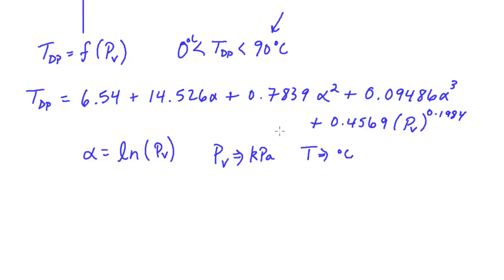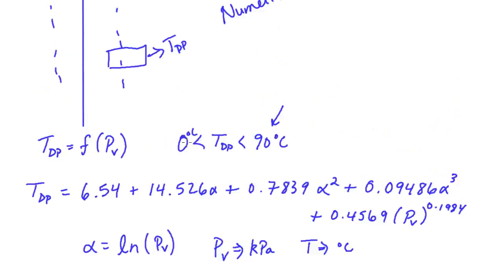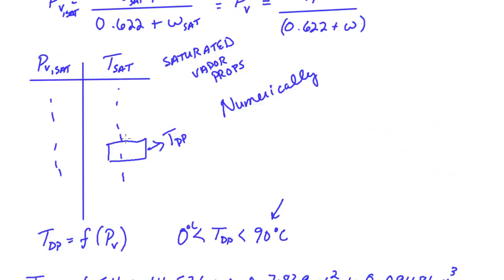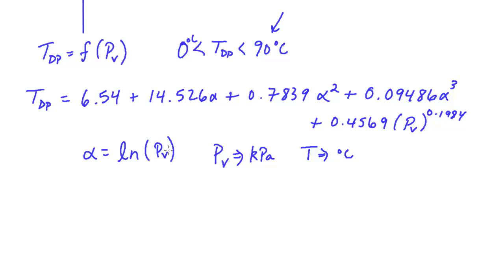And this equation assumes that you have partial pressure of vapor in units of kilopascal and temperatures in degrees C. Now, as an engineer or scientist, it should pain you to be using these non-standard units. And this equation has some very strange exponent, 0.1984, what is that? But all in all, basically this is an approximation to the process that we would have done with a table. And there's other equations you can go find for dew point temperature that may be simpler than this, but they're all approximations in one sense or the other.